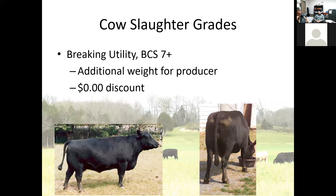There are also animals called premium whites — generally younger, really fat animals — that would bring even higher than breaking utility, but those are few and far between. In most cases you're probably not happy selling a premium white, because that cow should have been in your herd producing calves. Most cows end up in the boning utility category — probably 60 to 70% of our slaughter cows. Their body condition score is four to six, which is typically where we want our cows when we breed them and through the calving season.